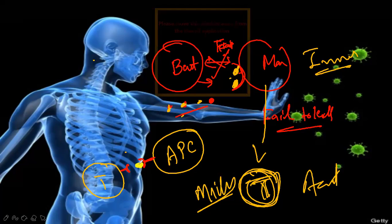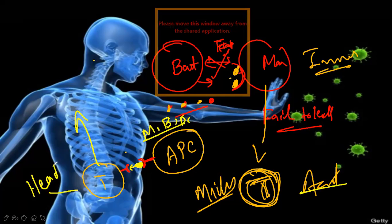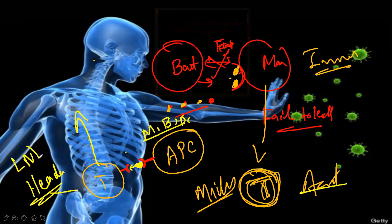Now the antigen presenting cell gives something to the T cell. So what is an antigen presenting cell? It may be a macrophage, may be a B cell, may be a dendritic cell. Now you can see how we convey our message to acquired immunity. This message is now in the headquarters — what was that headquarters? The lymph node.